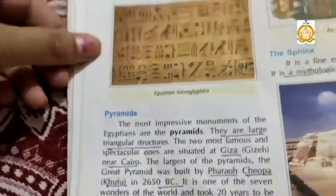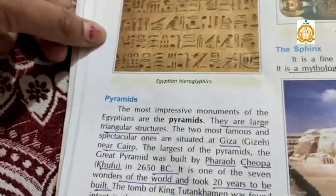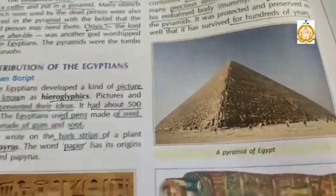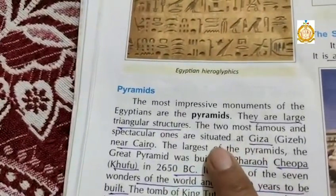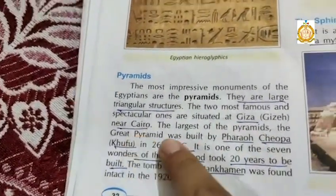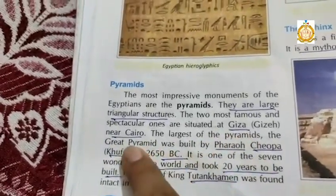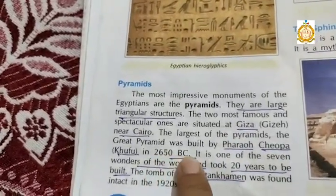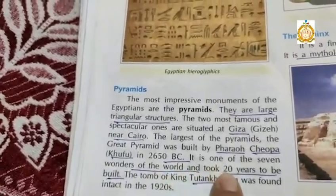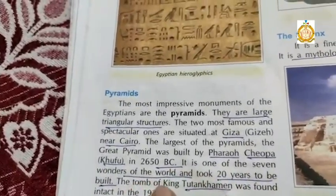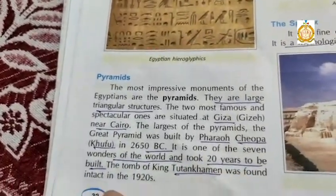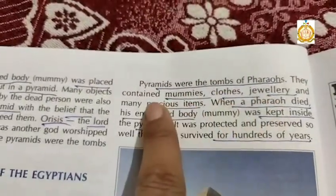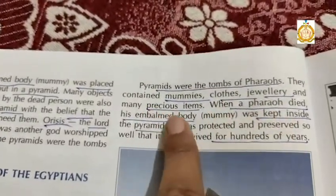The next contribution of the Egyptian civilization is the pyramids. Pyramids are large triangular structures. The most famous pyramids are situated at Giza near Cairo. The largest, the Great Pyramid, was built by Pharaoh Khufu in 2650 BC. It is one of the seven wonders of the world and took 20 years to be built. The tomb of King Tutankhamun was found intact in 1922. The pyramids contained mummies, clothes, jewelry and many precious items.